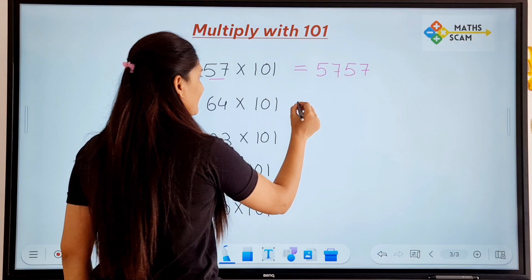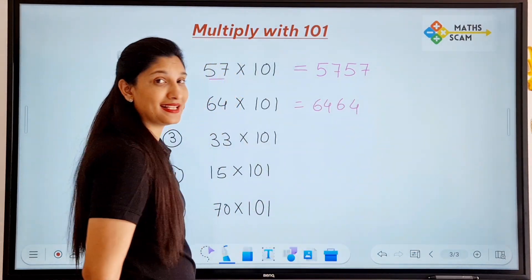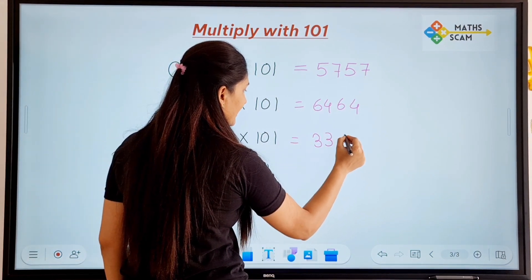64 times 101, really? 64, 64, that is 6,464. 33 into 101, that is equal to 3,333.